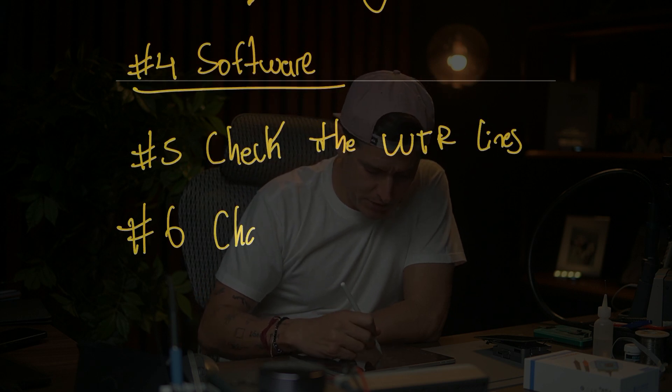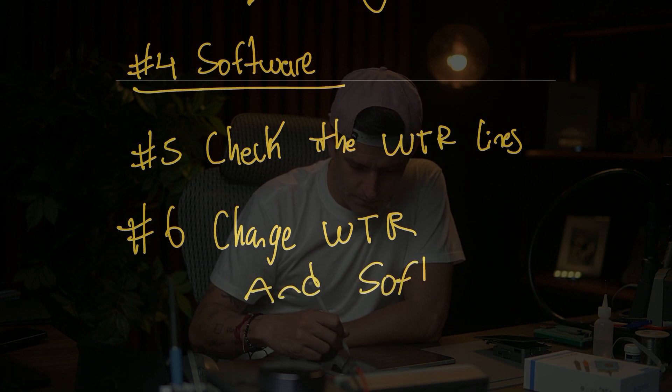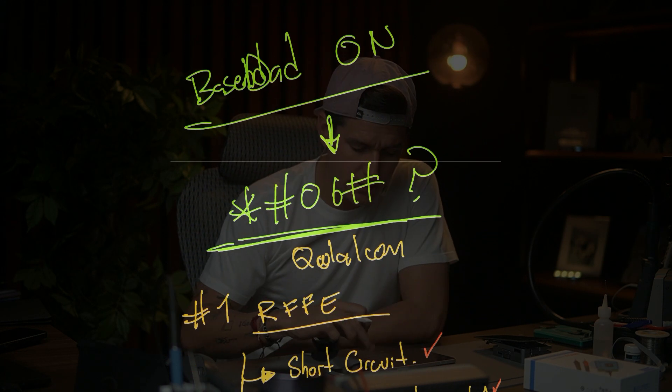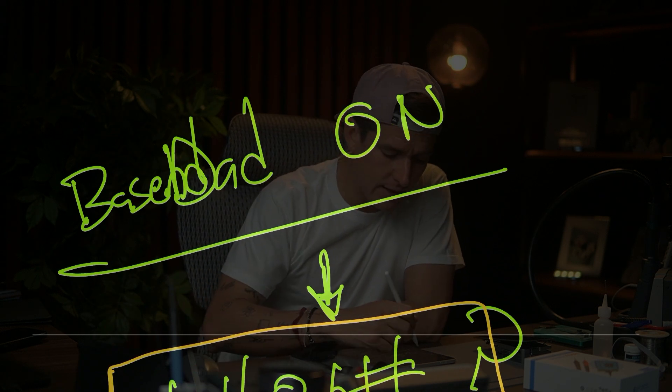Step five and six: change the WTR and run software. Only these six steps are the ones you need to check when you don't have a serial number on the screen but you do have a baseband version. In this case, the amplifier was disconnected from the WTR, the WTR couldn't recognize it, and that's why we had no serial number.